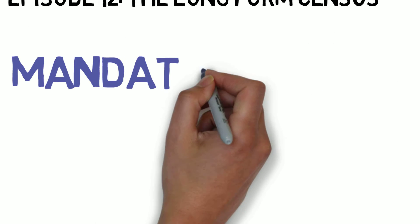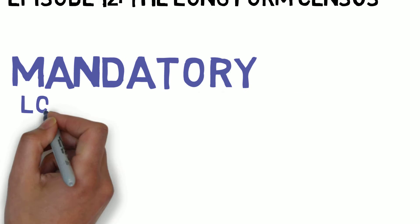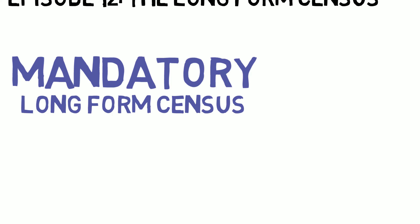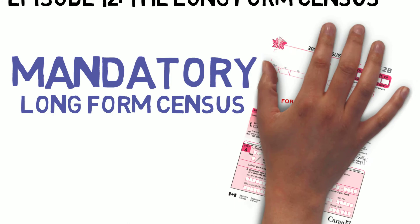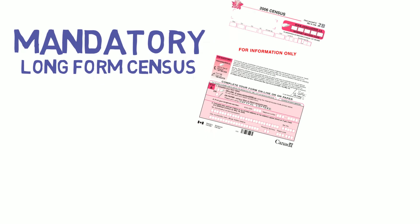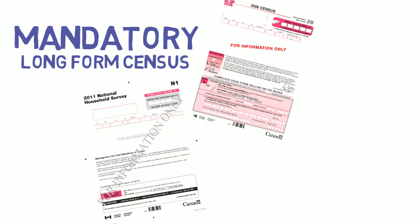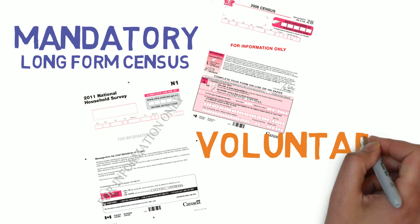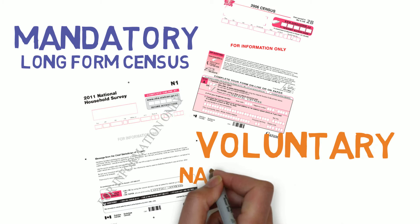For decades, Canadians responded to the mandatory long-form census. For the 2011 census cycle, the federal government replaced the mandatory long-form census with a voluntary national household survey.